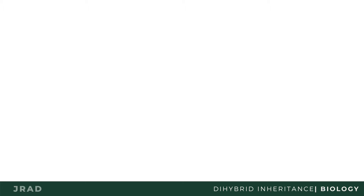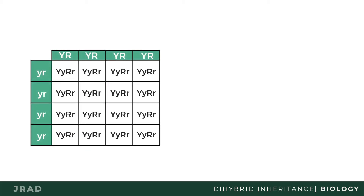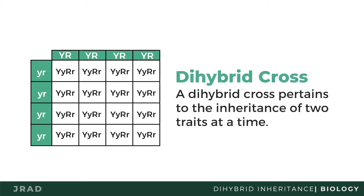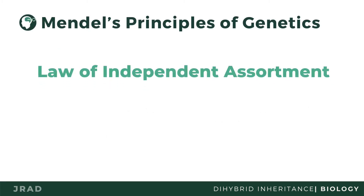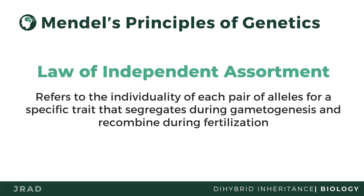In one of Mendel's experiments, he studied principles behind the simultaneous inheritance of two traits. Dihybrid inheritance pertains to the inheritance of two traits at a time. The law of independent assortment states that inheritance of two or more characteristics occurs separately from each other, implying that these characteristics are not codependent and have equal chances of being passed on to offspring.